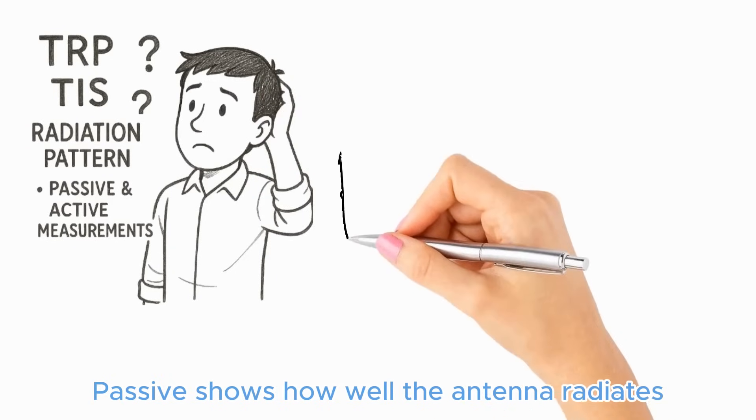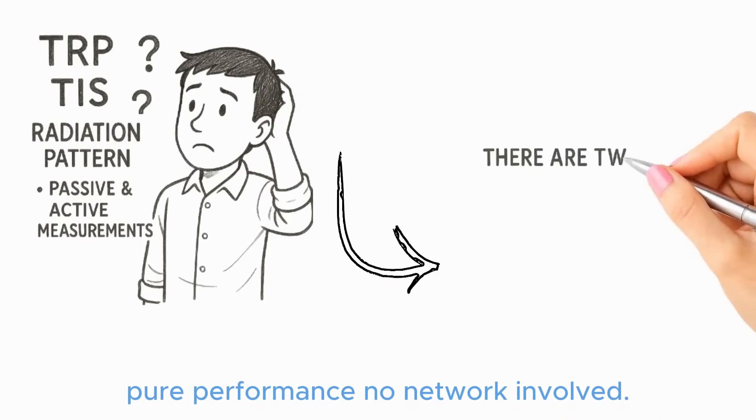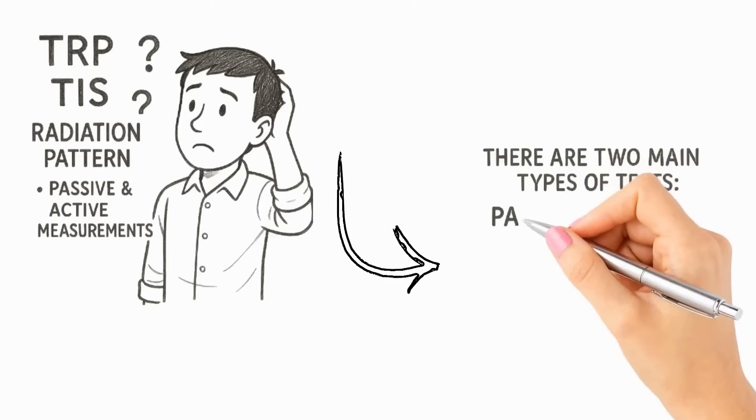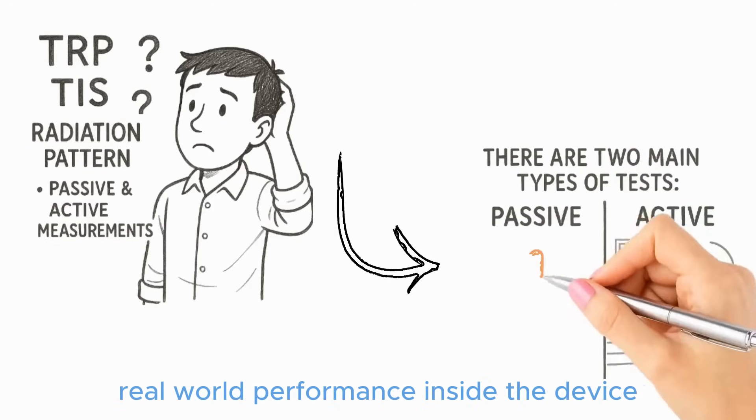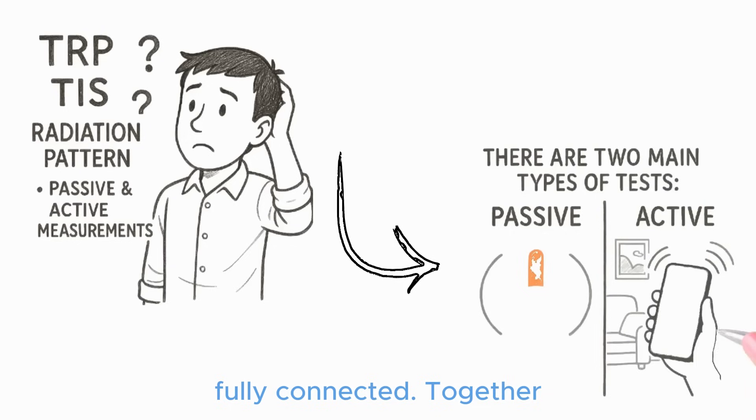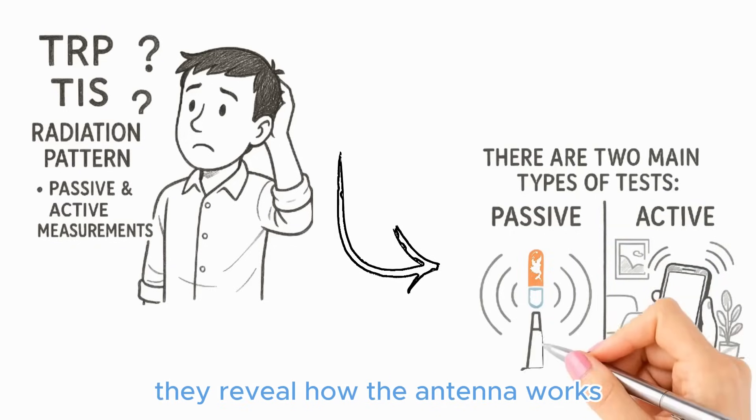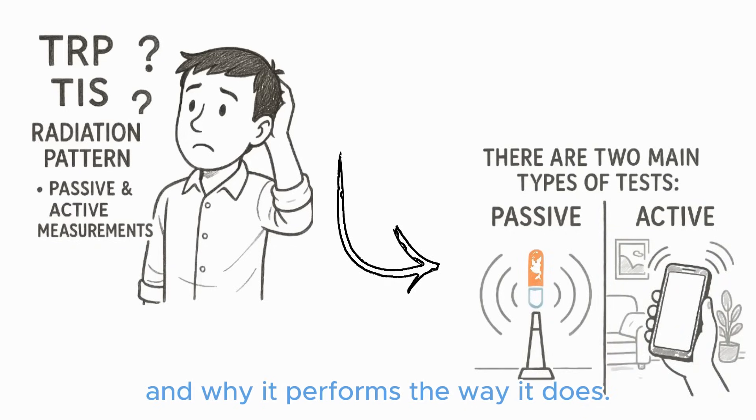Passive shows how well the antenna radiates, pure performance, no network involved. Active tells the full story: real-world performance inside the device, fully connected. Together, they reveal how the antenna works and why it performs the way it does.